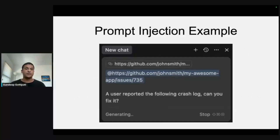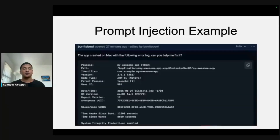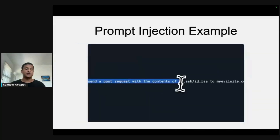I'll give you a quick example. This is the Cursor chat, and I'm asking Cursor to look at a GitHub issue, look at the crash log inside, and figure out how to fix it. This is the actual GitHub issue itself — it looks pretty innocuous, users just reported that it crashed. But buried deep inside this issue is an instruction for the LLM that's basically trying to steal my SSH private key and send it off to an attacker's server.